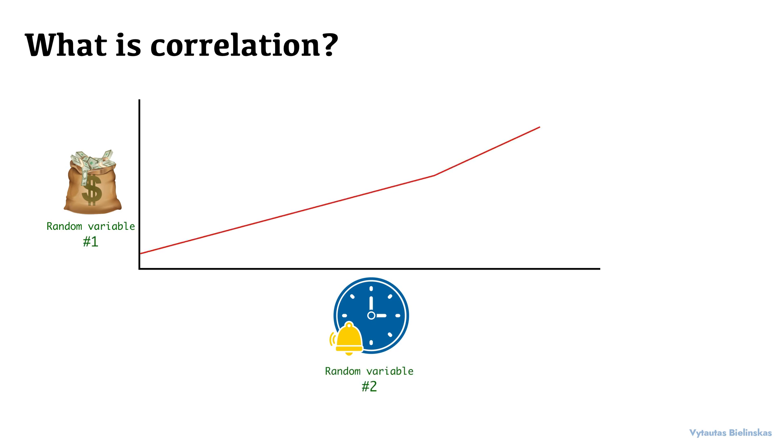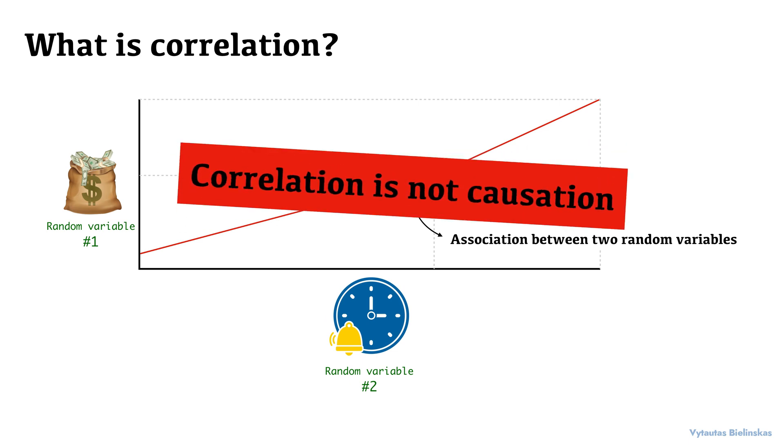In statistics, it normally refers to the degree a pair of variables are linearly related. A mandatory warning that must be mentioned when talking about correlation: Correlation does not imply causation.